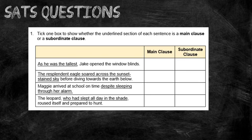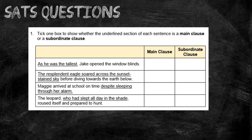The second sentence: 'The resplendent eagle soared across the sun-stained sky before diving towards the earth below.' The underlined part — 'the resplendent eagle soared across the sun-stained sky' — would make sense as a sentence on its own, so that is the main clause. The part not underlined, 'before diving towards the earth,' begins with the subordinating conjunction 'before,' making it the subordinate clause. In the next sentence: 'Maggie arrived at school on time, despite sleeping through her alarm.' The subordinating conjunction is 'despite,' so the underlined part is actually the subordinate clause.